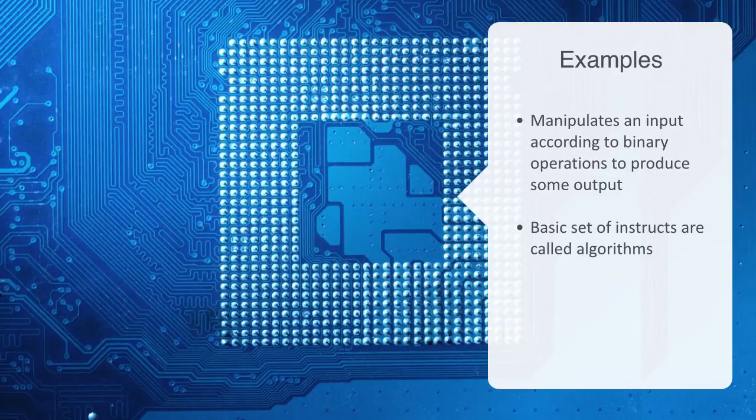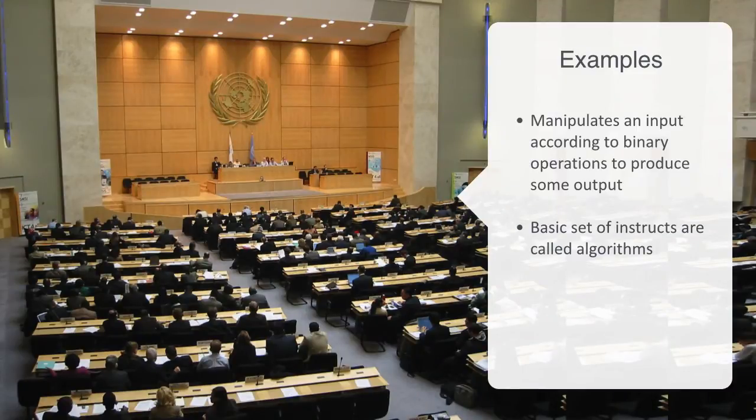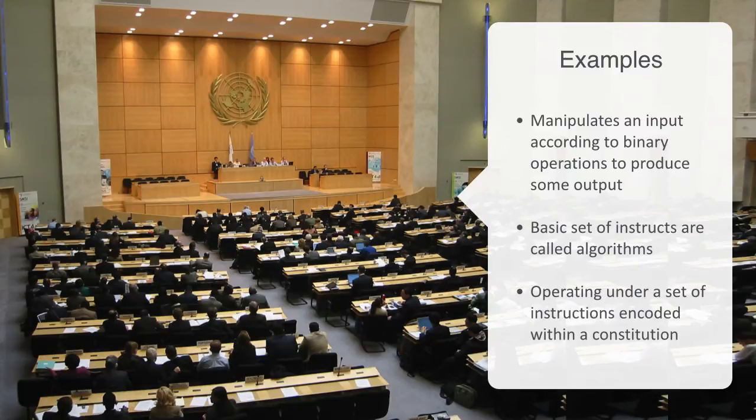To take an example of a much more complex controller, we might think about a democratic nation's public administration system. Operating under a set of instructions encoded with a constitution, it is designed to take information about the state of the nation that has been received from a number of different sensors, such as the mass media or statistics gathering, and process this information according to these set of instructions to produce the policies and regulations required to maintain and develop the socioeconomic system of the nation-state.